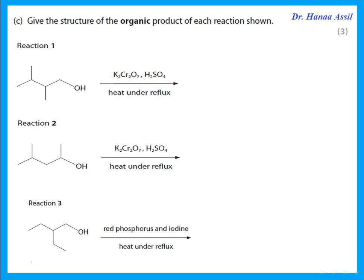Give the structure of the organic product of each reaction. Reaction one: a primary alcohol with potassium dichromate (oxidizing agent) is oxidized to a carboxylic acid. Reaction two: a secondary alcohol is oxidized to give a ketone. Reaction three: a primary alcohol reacting with red phosphorus and iodine — this replaces the OH with iodine, giving the iodoalkane product.